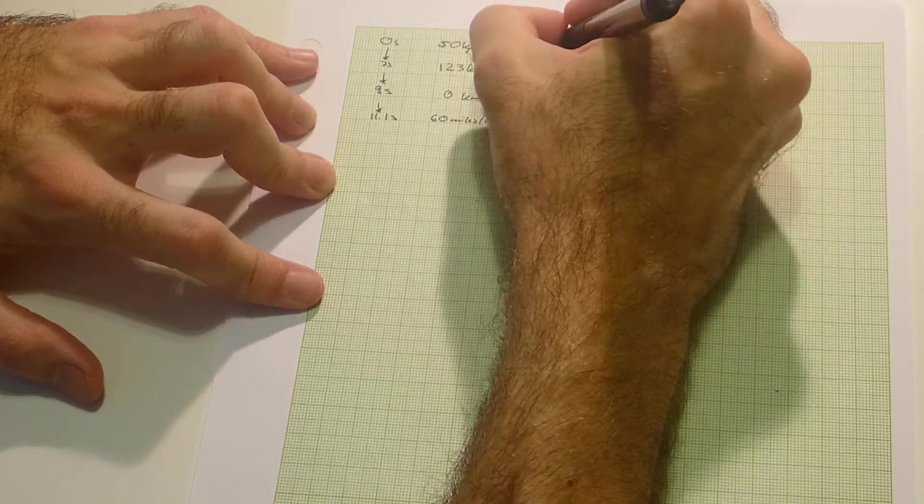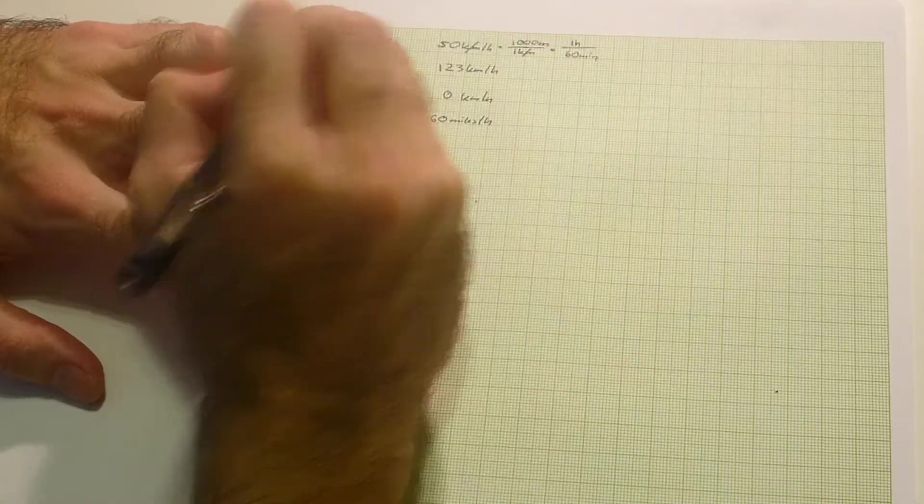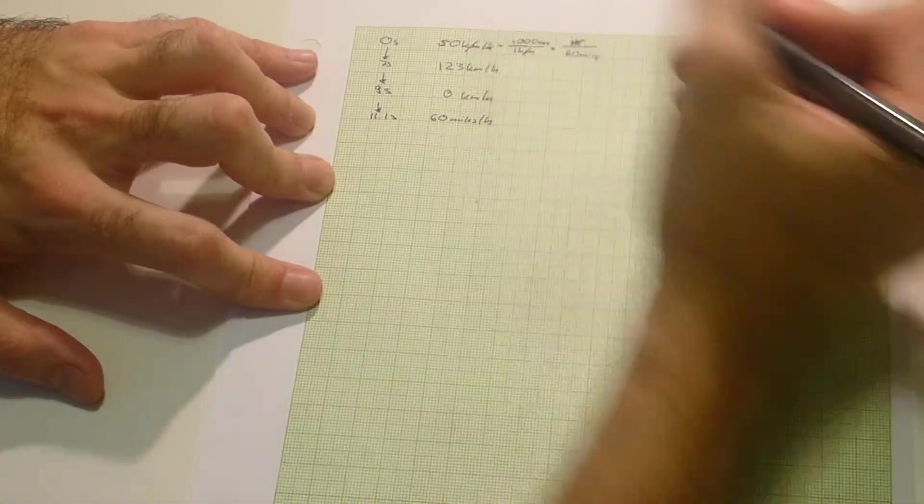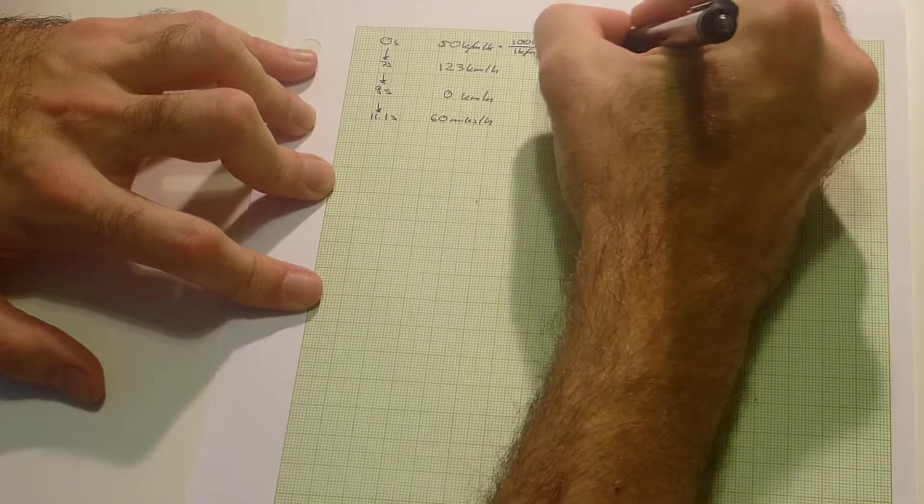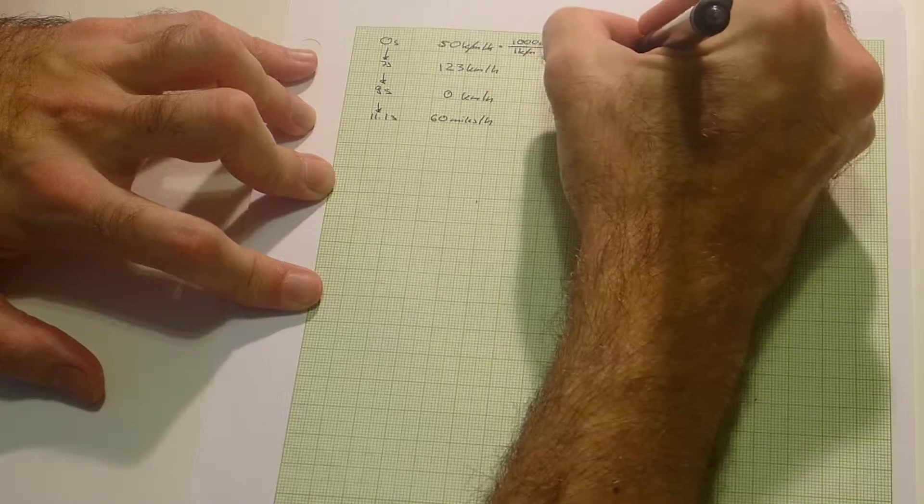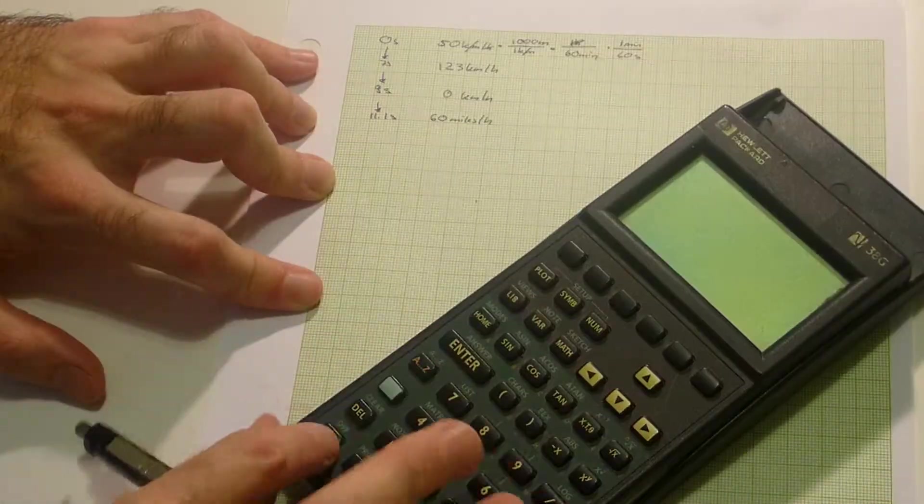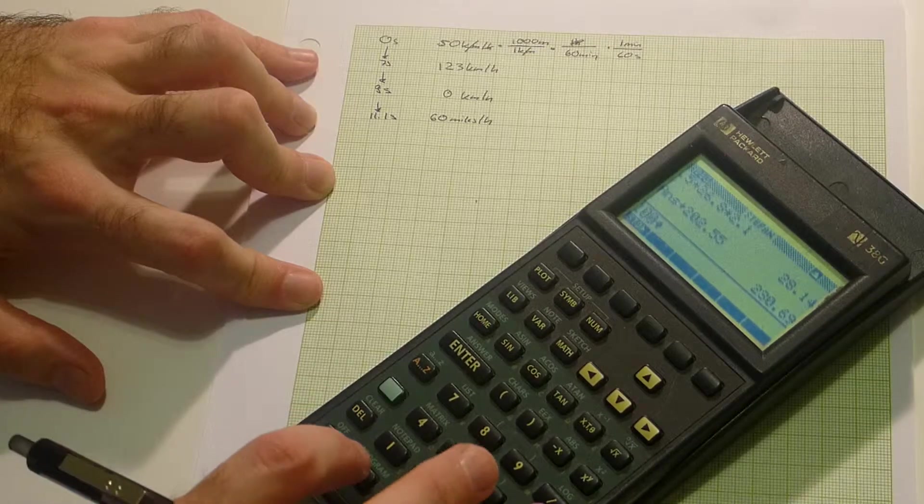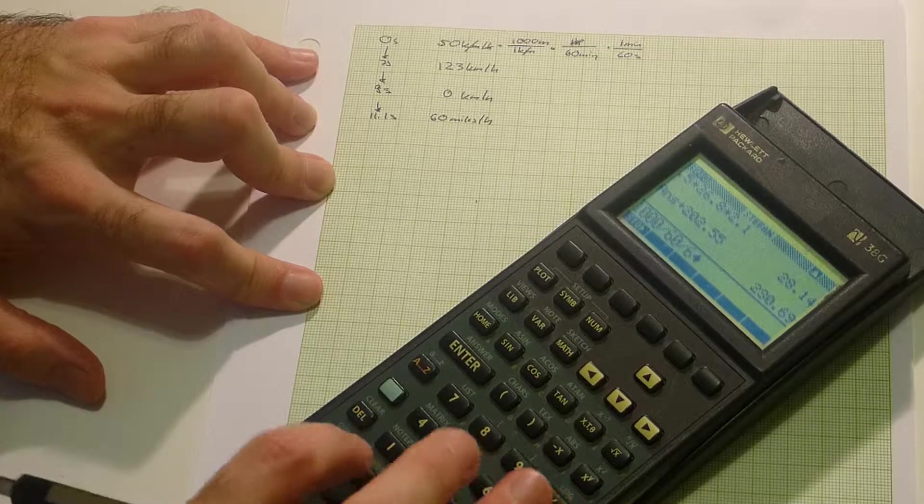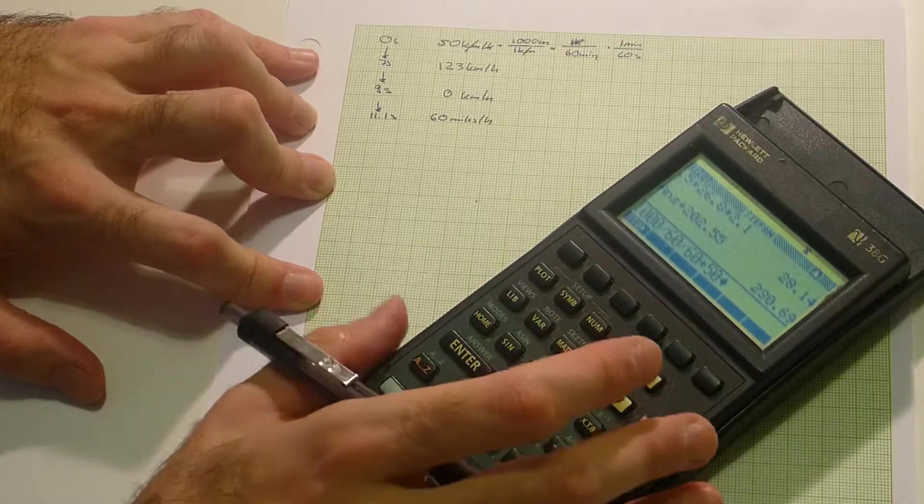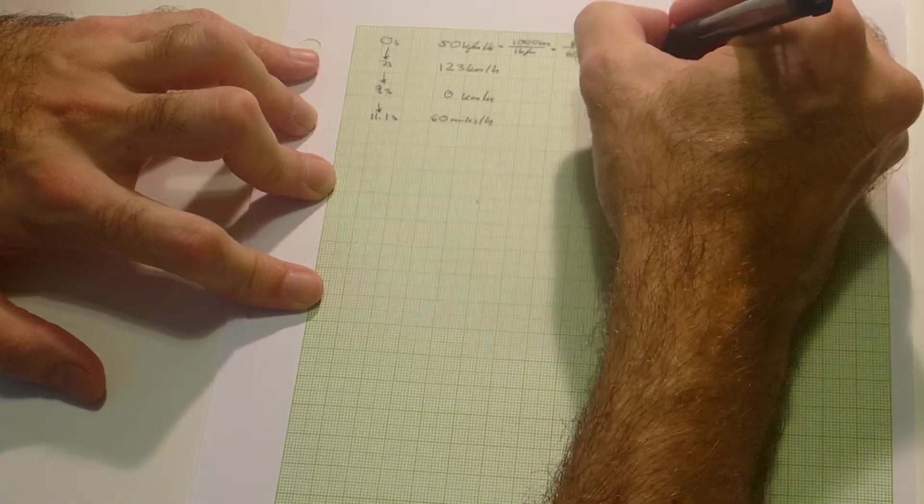1 hour is 60 minutes, and there goes the hour. I need to get rid of the minutes, so 1 minute is 60 seconds. 50 times 1000 divided by 60 divided by 60 is around 14 meters per second.